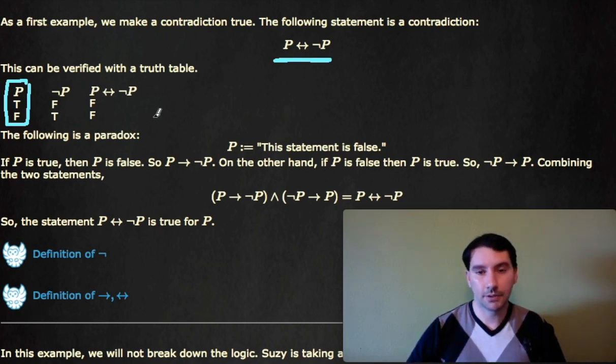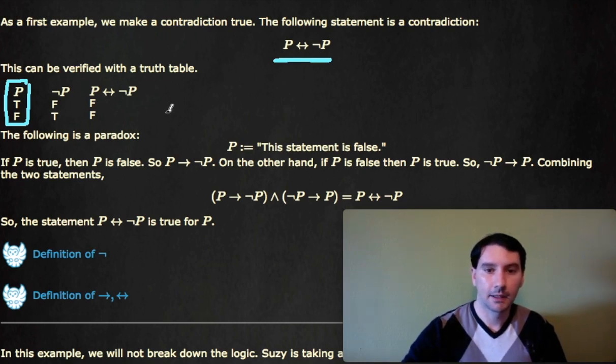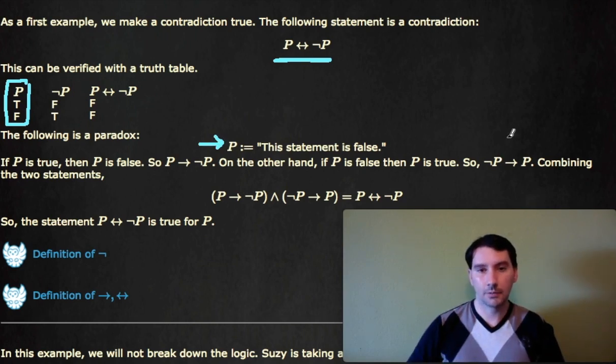But we can construct an English statement to make this a true statement. The statement is P equals this statement is false. So I'm looking at this statement here. If P is true, well, P claims the statement is false and therefore P is false. Therefore, P implies not P. So if P is true, then P is false.